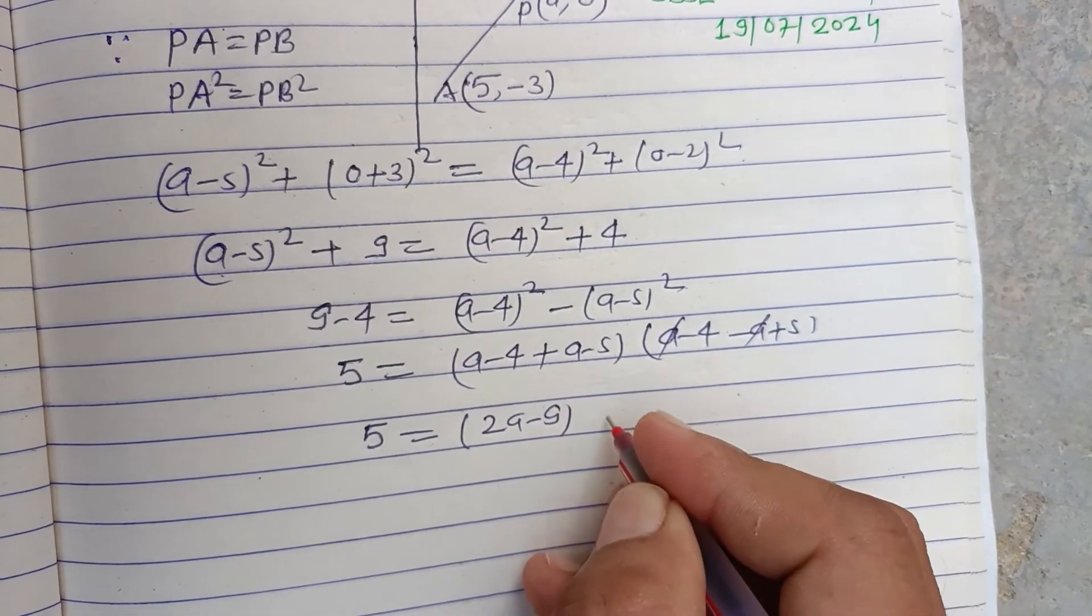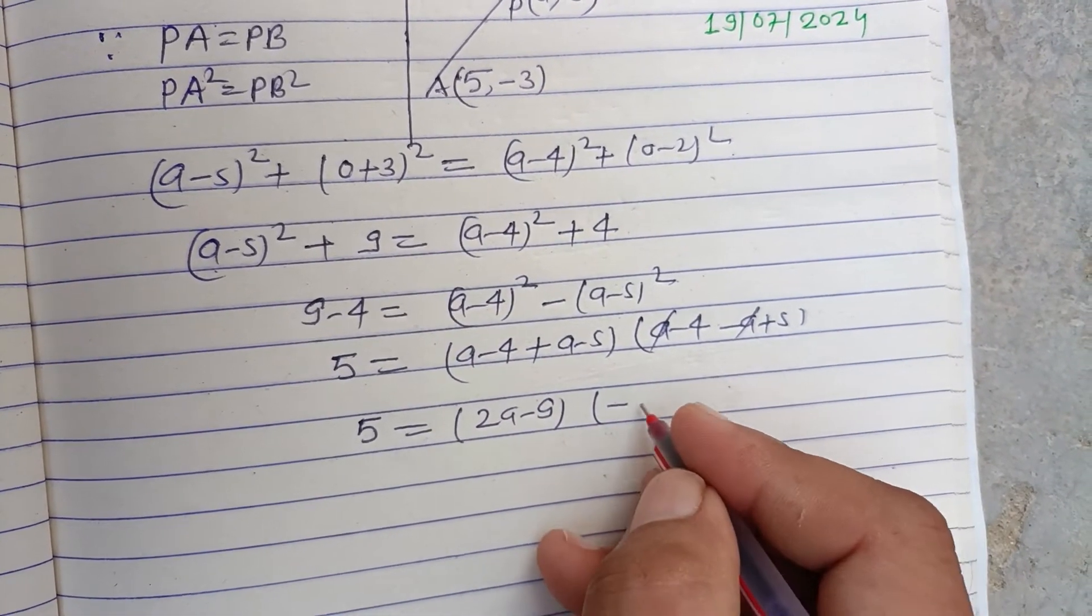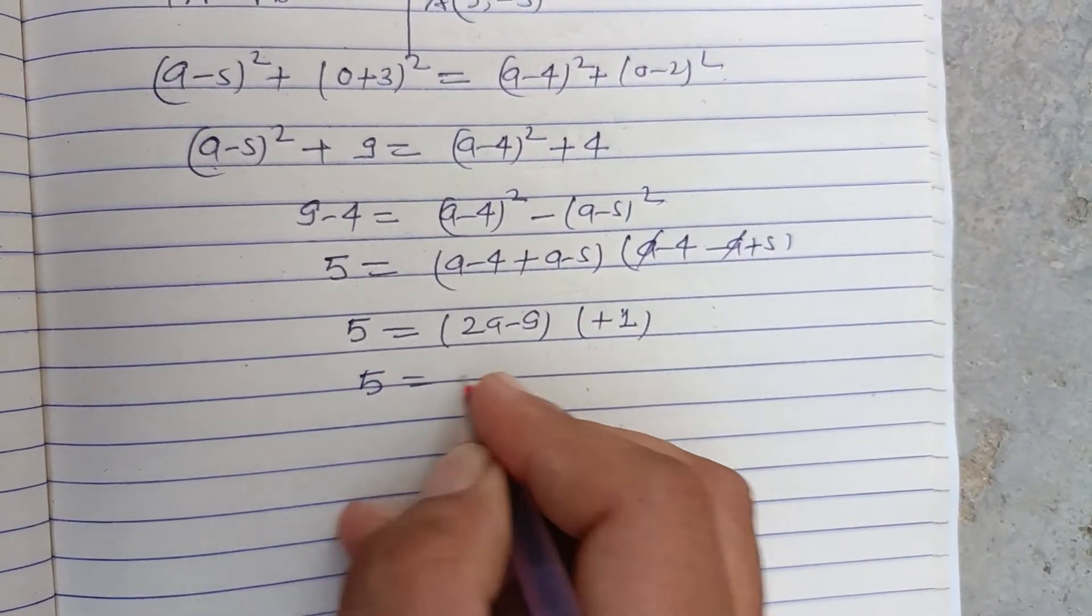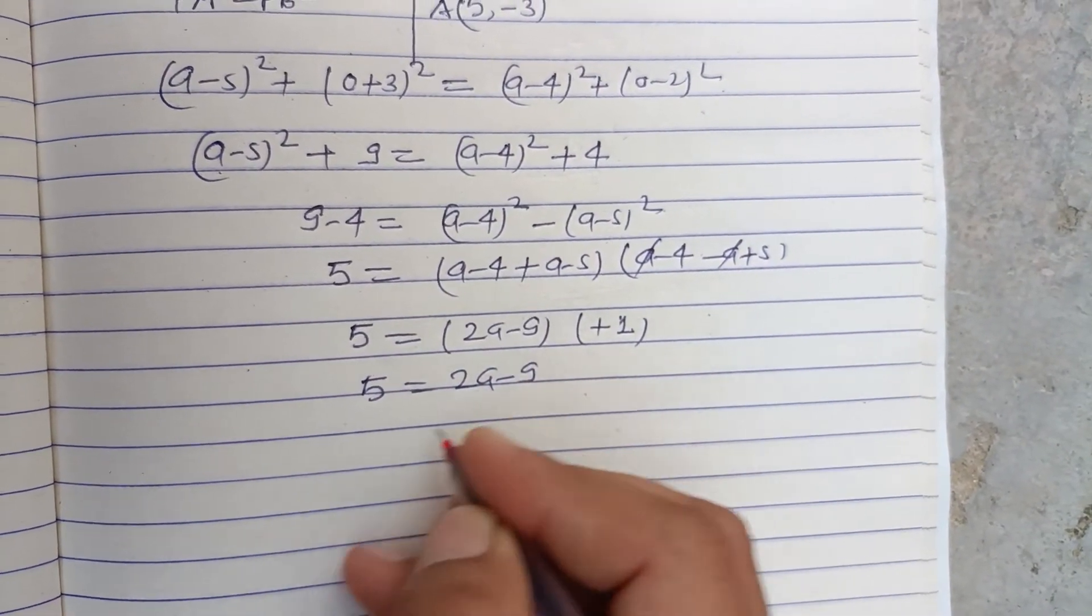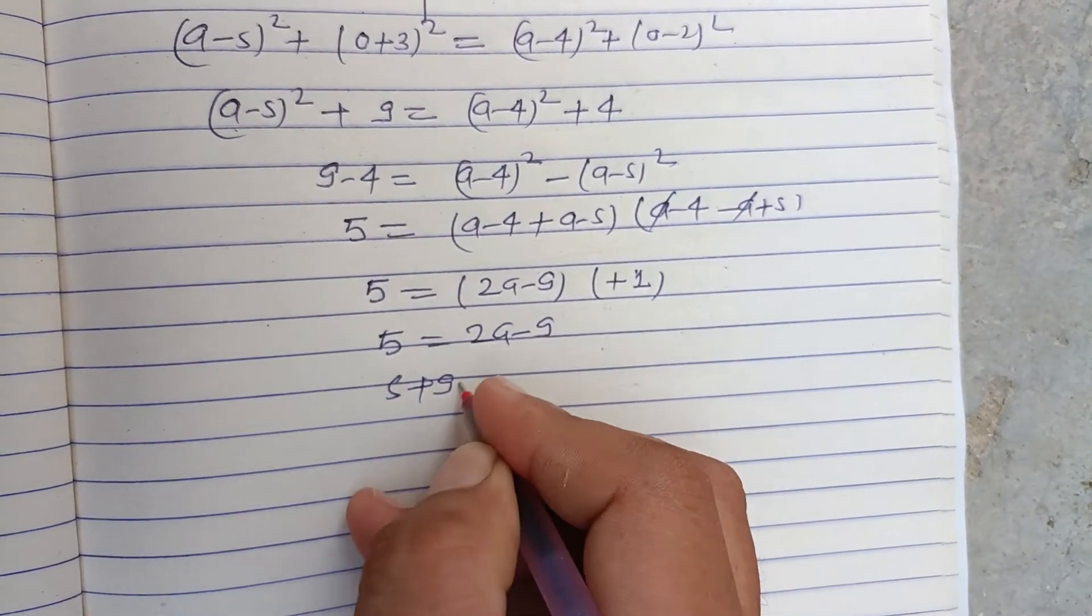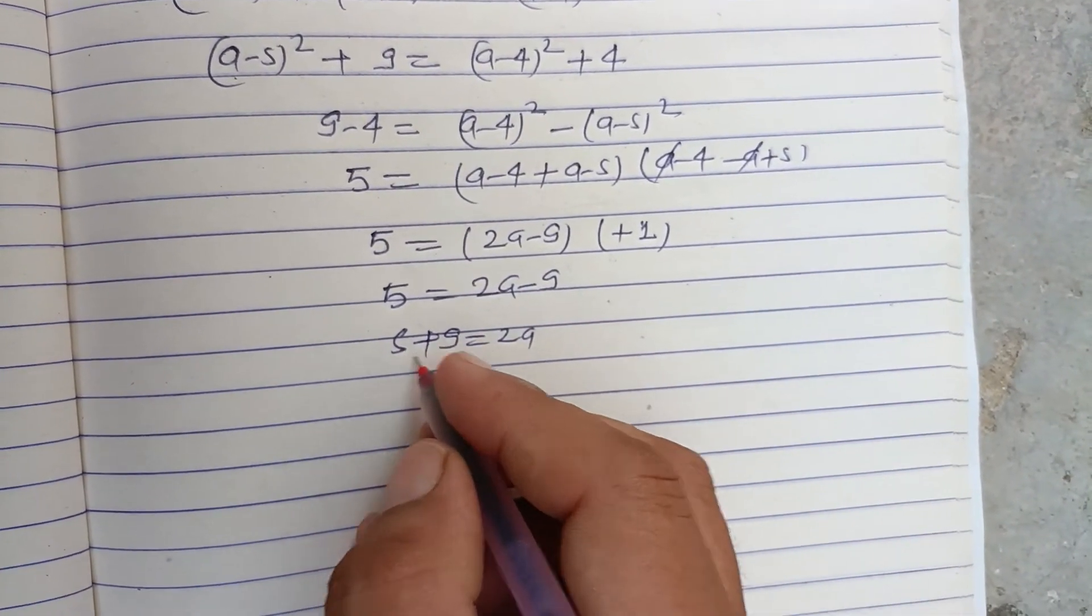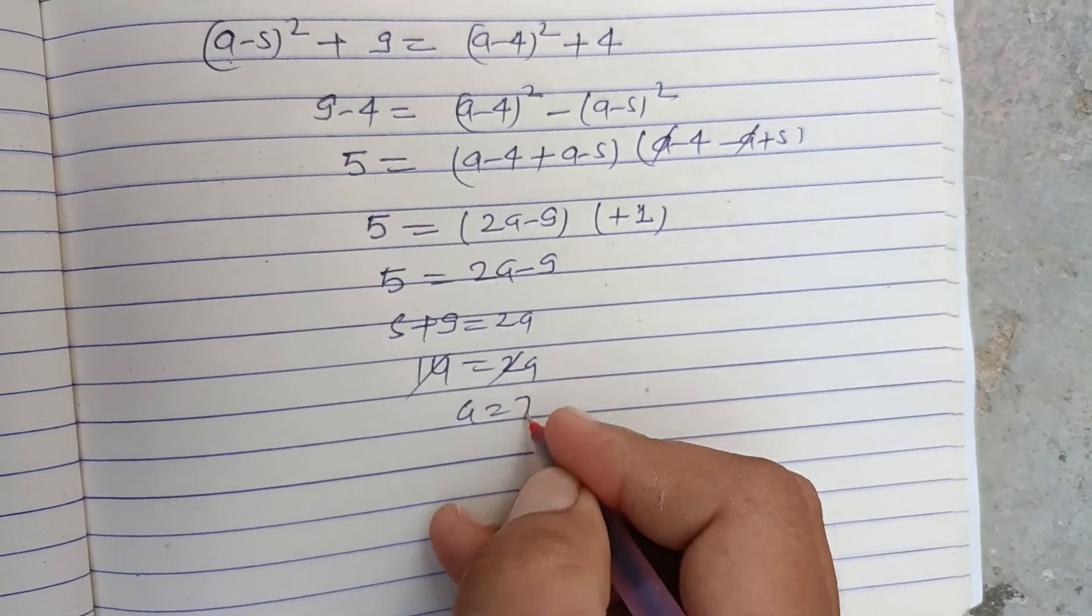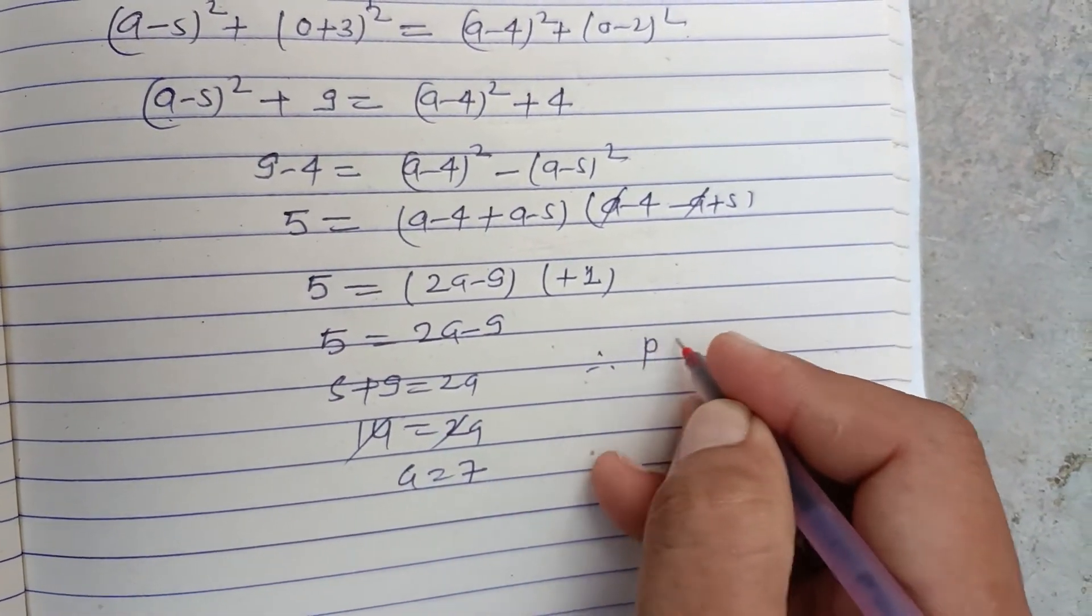So 5 = 2a - 9, which gives us 5 + 9 = 2a. That's 14 = 2a. Dividing by 2, we get a = 7. So point P is (a,0), that is (7,0).